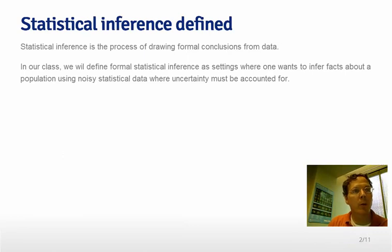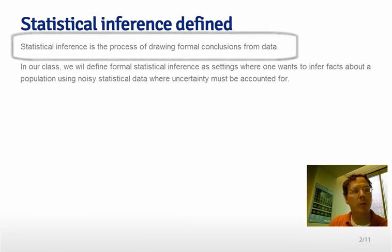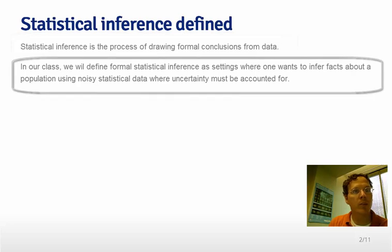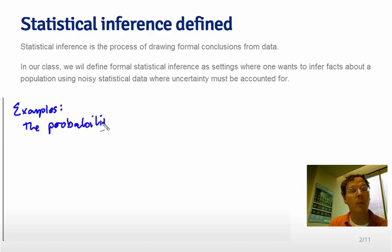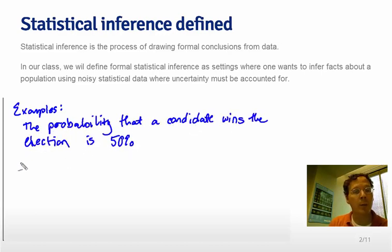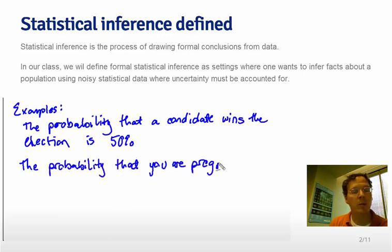Statistical inference is the process of drawing formal conclusions from data. In our class, we're going to define formal statistical inference as settings where one wants to infer facts about a population using noisy statistical data where uncertainty must be accounted for. Whenever someone says something like the probability that something occurs, or gives a confidence interval, or a hypothesis test, they are performing a statistical inference.